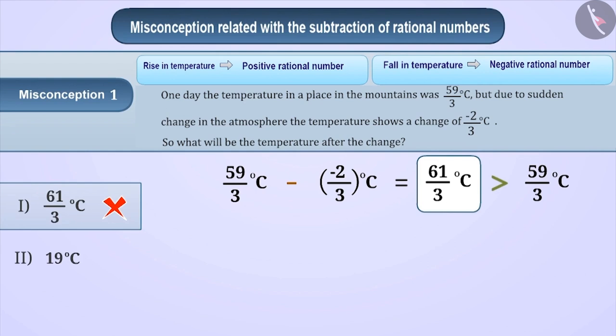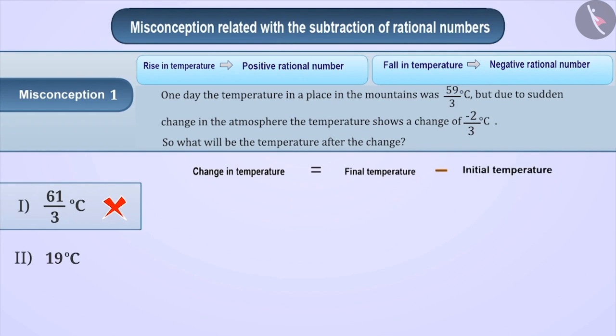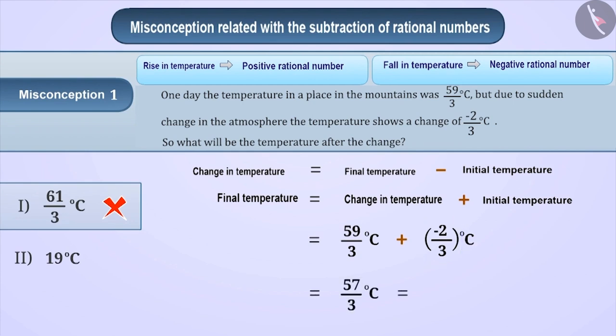The correct understanding is that the initial state is subtracted from the final state to obtain the change. Like here, temperature change equals final temperature minus initial temperature. We can write this as final temperature equals change in temperature plus initial temperature. So this means we have to add both rational numbers. 59 by 3 plus minus 2 by 3 equals 57 by 3, which equals 19 degrees centigrade. That is the correct answer, option 2.